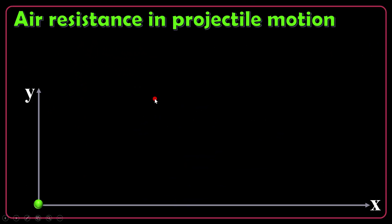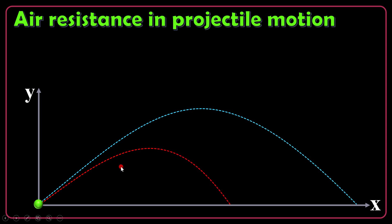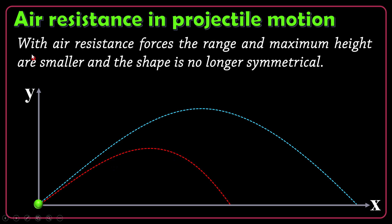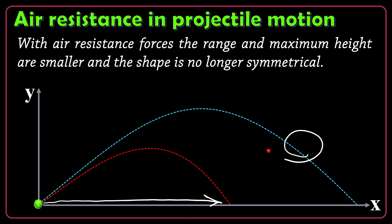Air resistance in projectile motion. Let's throw two objects — the blue one in the absence of any drag force, and the red one in the presence of air resistance. With air resistance, the range — the total horizontal displacement — is smaller than for the blue object with no air resistance. The maximum height is also smaller than when there is no air resistance.